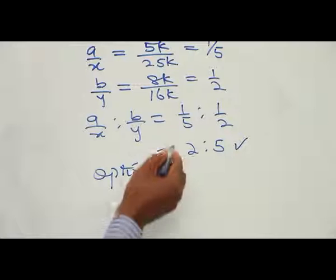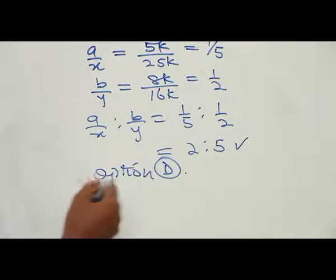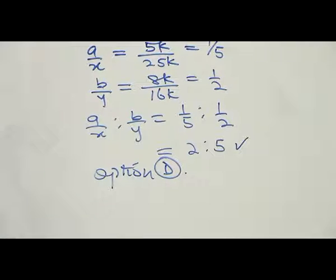At the end of the day, ratio 2 to 5 is the solution to the problem. Option B in our options is the correct option.